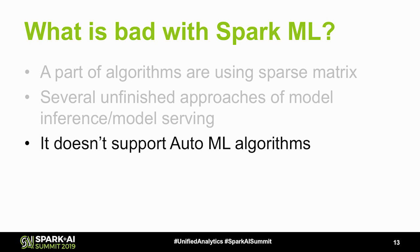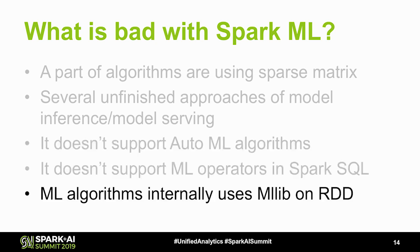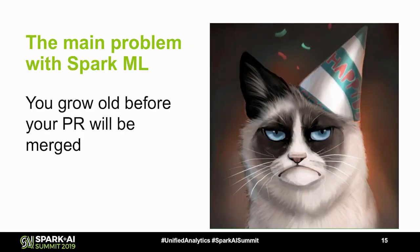Spark ML doesn't support AutoML algorithms for hyperparameter tuning — I mean not only grid search as implemented in pipelines, but really smart hyperparameter tuning. ML algorithms internally use MLlib, which should be deprecated but hasn't been fully rewritten on DataFrames. The main problem with Spark ML from my perspective is the contribution process: I tried to prepare many PRs to Spark ML but you grow old before your PR will be merged. You need years to add a reasonable feature if you are not a Spark PMC member.